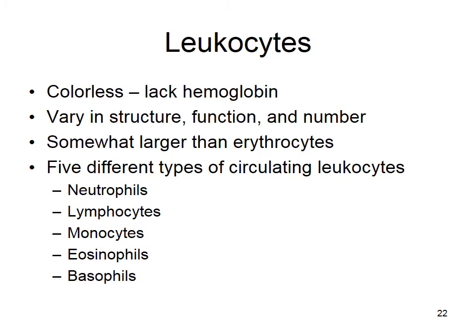White blood cells are called white because they are colorless — they have no hemoglobin and do not transport oxygen. They are larger than your red blood cells, and we're going to talk about five different types, listed from most numerous to least numerous. A mnemonic to remember them: 'Never Let Men Eat Burritos' — neutrophils are the most numerous and basophils are the least.